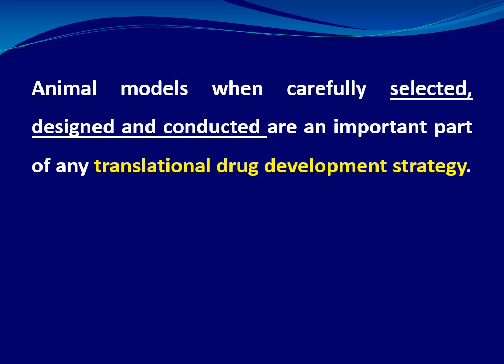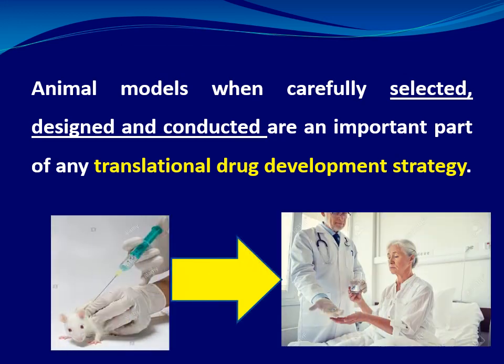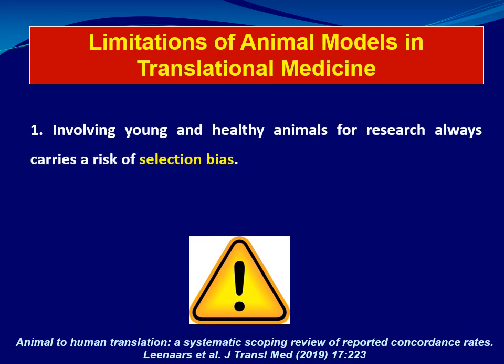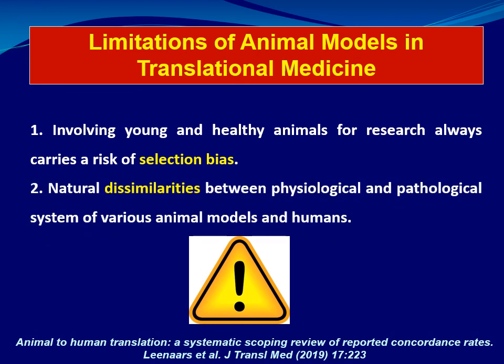Animal models, when carefully selected, designed, and conducted, are a very important part of any translational drug development strategy for translating data from preclinical research to the clinic. Despite all these stages, limitations remain: selection bias from using young healthy animals, and natural physiological and pathological dissimilarities between animal models and humans due to species variation. We must ask ourselves what the observed range of animal-to-human translational success and failure rates is within currently available empirical evidence.